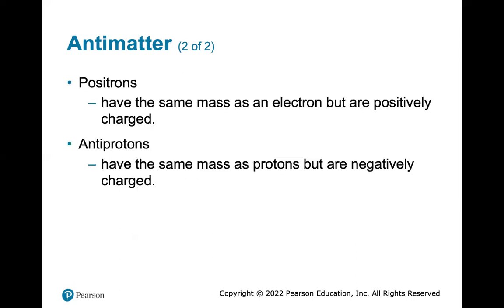Positrons have the same mass as an electron but are positively charged. Antiprotons have the same mass as protons but are negatively charged.